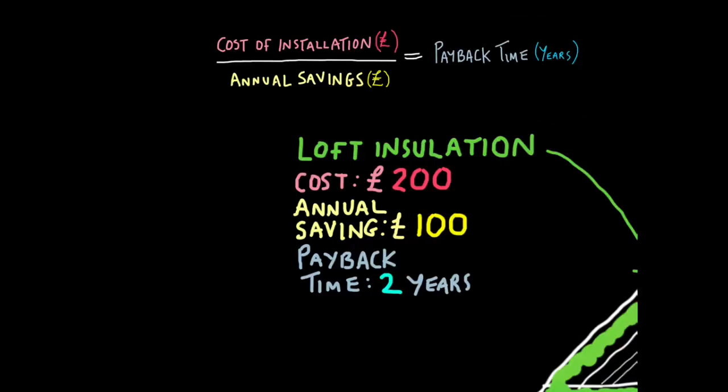So, loft installation costs £200. That's the cost of installation. But every year, it saves you £100 in energy. So that means it will take two years before you pay back the cost of installation. In other words, cost of installation, £200, divided by annual savings, £100, gives you payback time, two years.